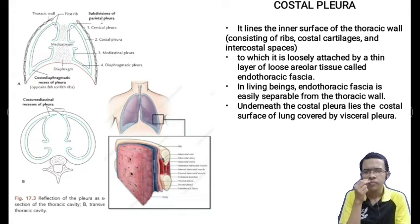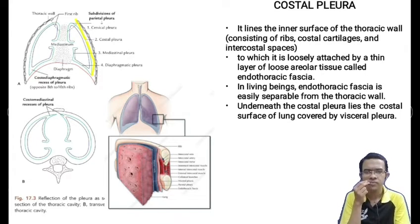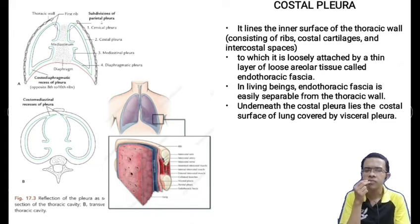Regarding the costal pleura — it lines the inner surface of the thoracic wall, which consists of ribs, costal cartilages, and intercostal spaces. To the thoracic wall, the costal pleura is loosely attached by a thin layer of loose areolar tissue called the endothoracic fascia. In living beings, the endothoracic fascia is easily separable from the thoracic wall. Underneath the costal pleura lies the costal surface of the lung covered by visceral pleura.